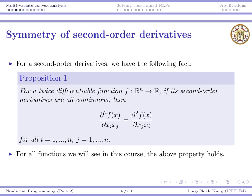For second order derivatives, if they are all continuous, the order of differentiation does not matter. If some second order derivatives are not continuous, the order may matter. In this course we will only focus on functions whose second order derivatives are continuous, which applies to most basic functions relevant in business and economics. So we can always assume that the order of taking derivatives does not matter.